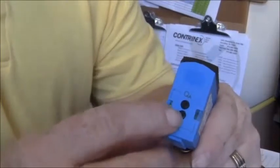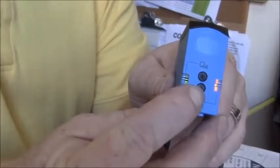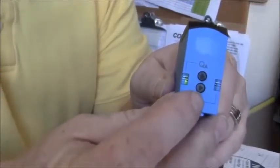To change from normally open to normally closed, you press the Q until both lights flash alternately. About 10 seconds. And if you press it one more time, that switches it and let it go.